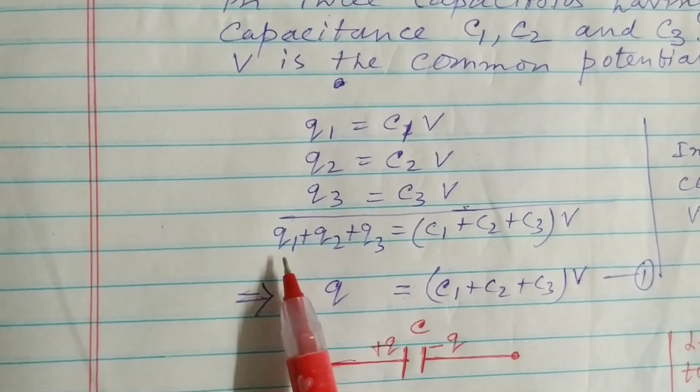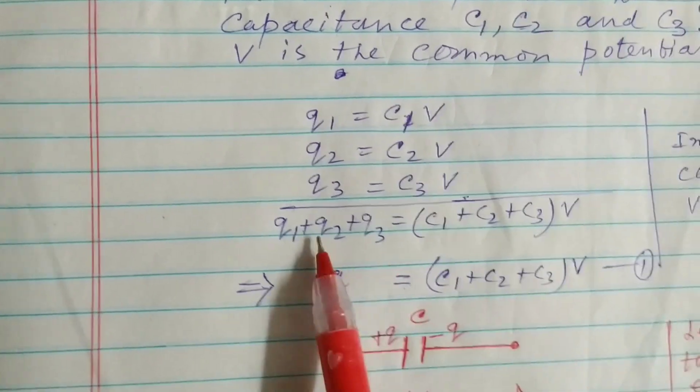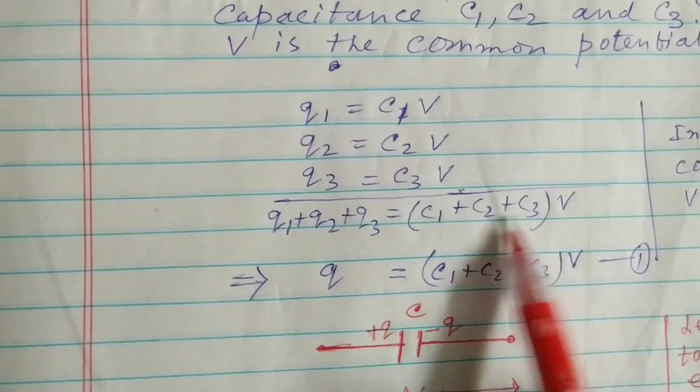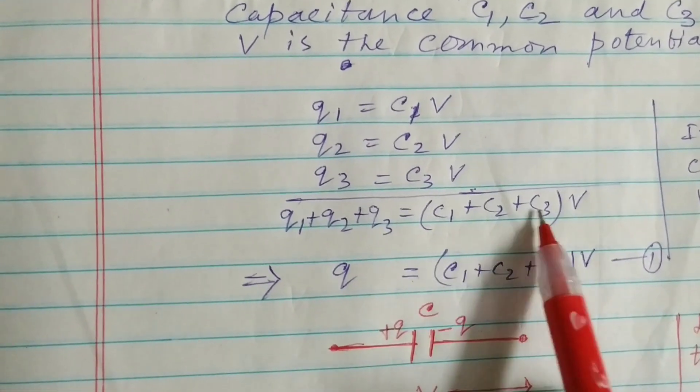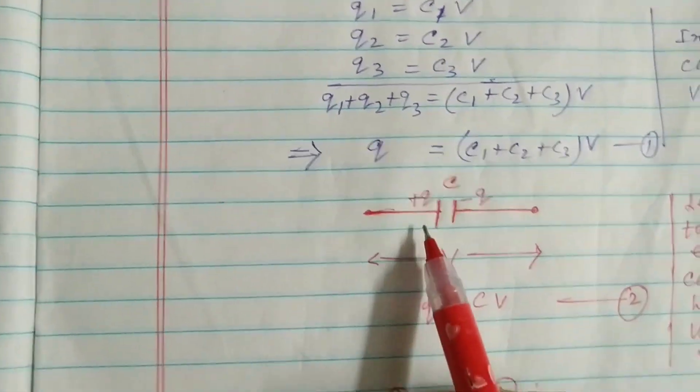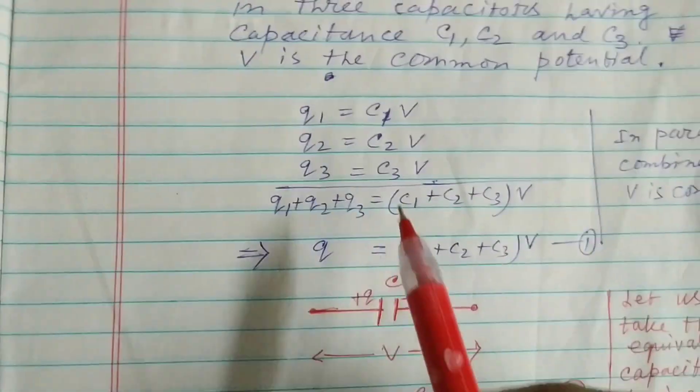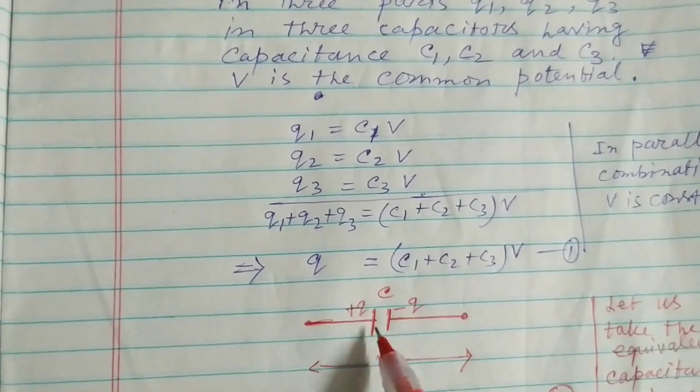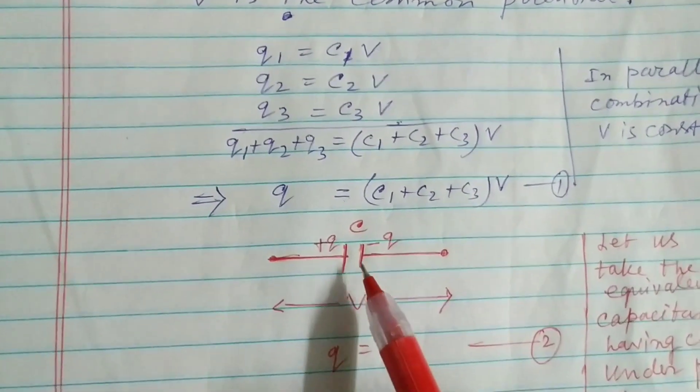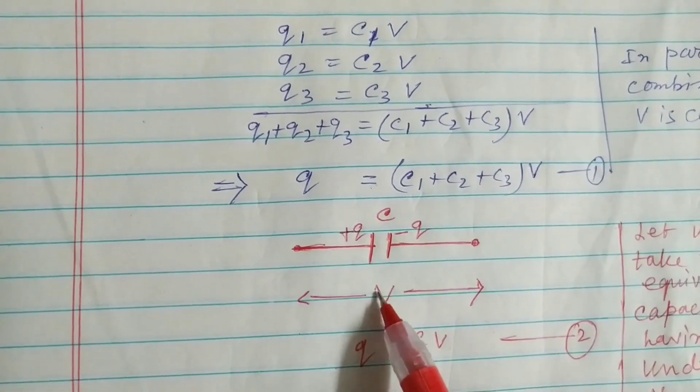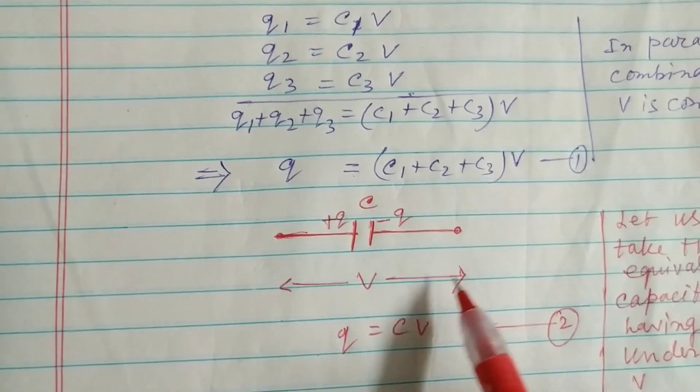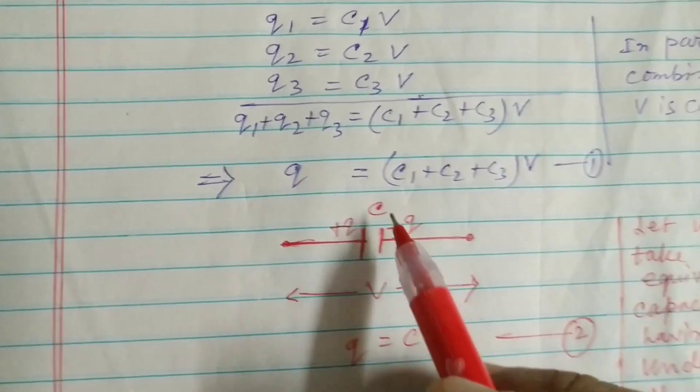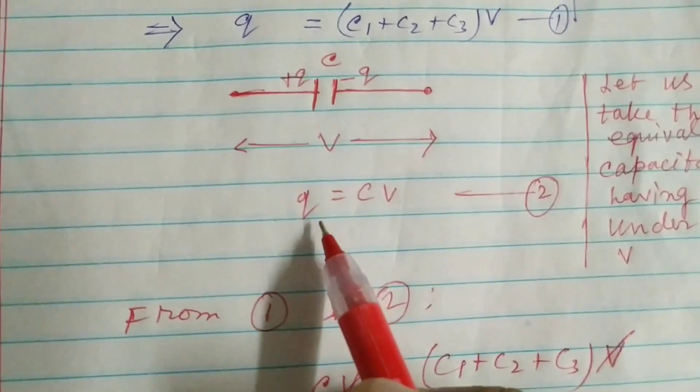Now if you add these three, it will be Q1 plus Q2 plus Q3 and that will equal Q, and this side V you take common: C1 plus C2 plus C3. Now take the equivalent capacitor which has similar function of all these capacitors. So charge is plus Q minus Q, common potential V, and this is C. Now Q equals CV.